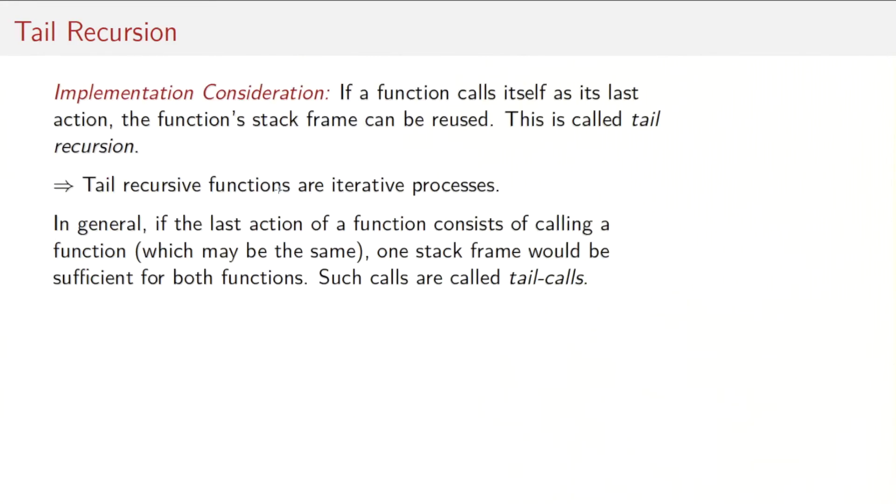Both factorial and GCD only call itself. But in general, of course, a function could call other functions. So the generalization of tail recursion is that if the last action of a function consists of calling another function, maybe the same, maybe some other function, the stack frame could be reused for both functions. Such calls are called tail calls.